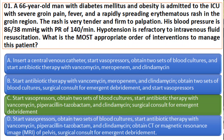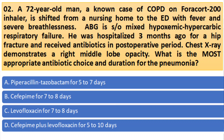There is no question of shifting the patient to CT or MRI at this stage. Moving on to the next clinical scenario — Question 2. A 72-year-old man, a known case of COPD on inhaler, is shifted from a nursing home to the emergency department with fever and severe breathlessness. ABG is suggestive of mixed hypoxemic hypercapnic respiratory failure. He was hospitalized three months ago for a hip fracture and received antibiotics postoperatively. Chest X-ray demonstrates a right middle lobe opacity. What is the most appropriate antibiotic choice and duration? A) Piperacillin-tazobactam for 5-7 days. B) Cefepime for 7-8 days. C) Levofloxacin for 7-8 days. D) Cefepime plus Levofloxacin for 5-10 days.